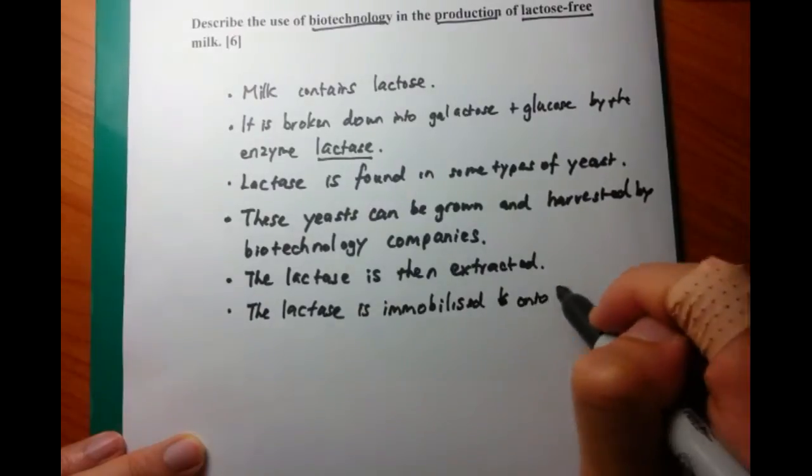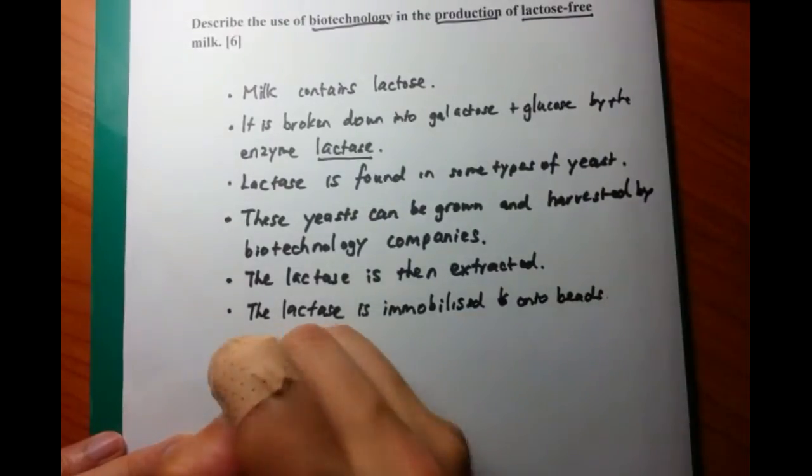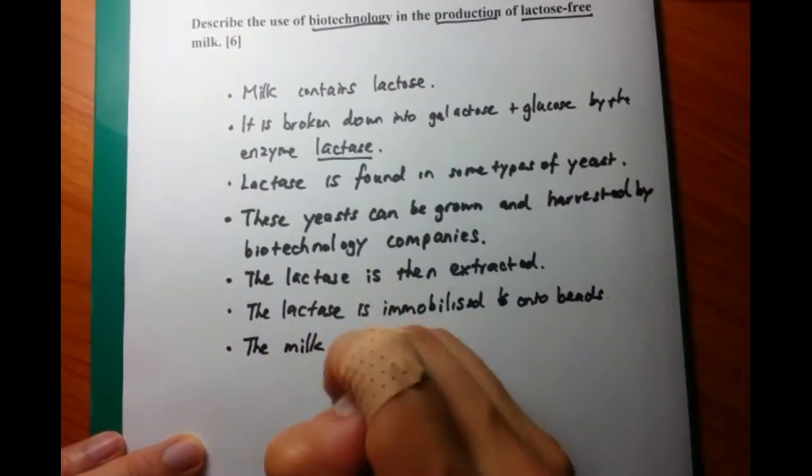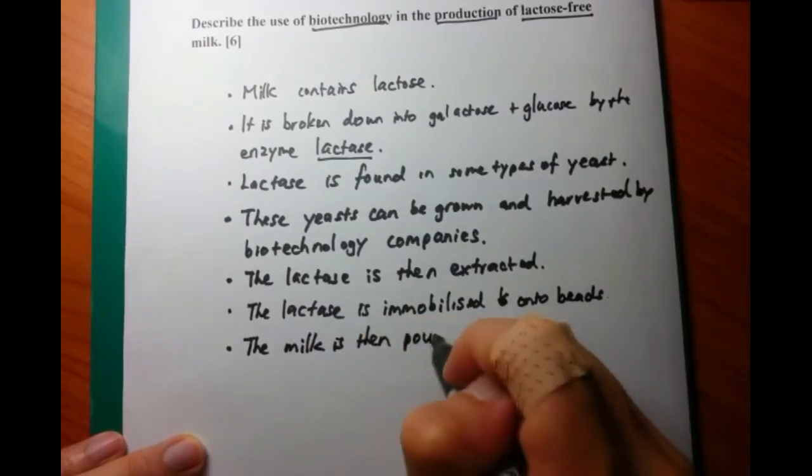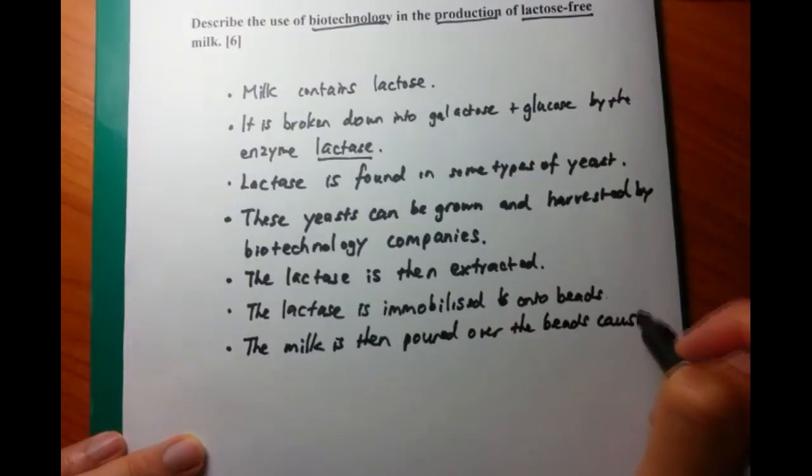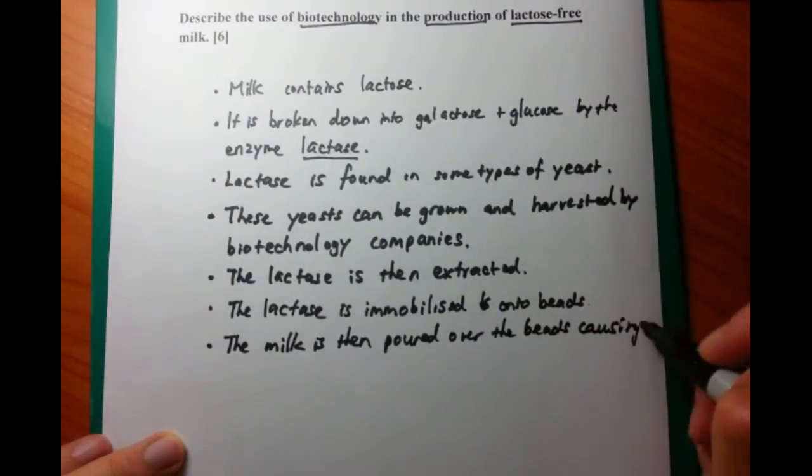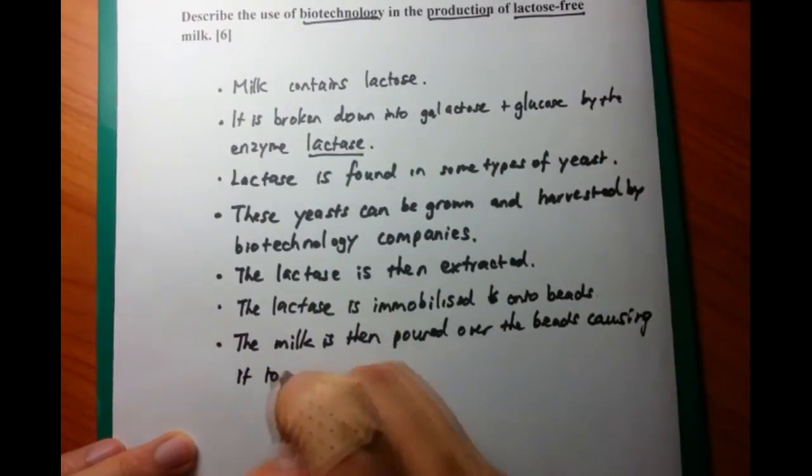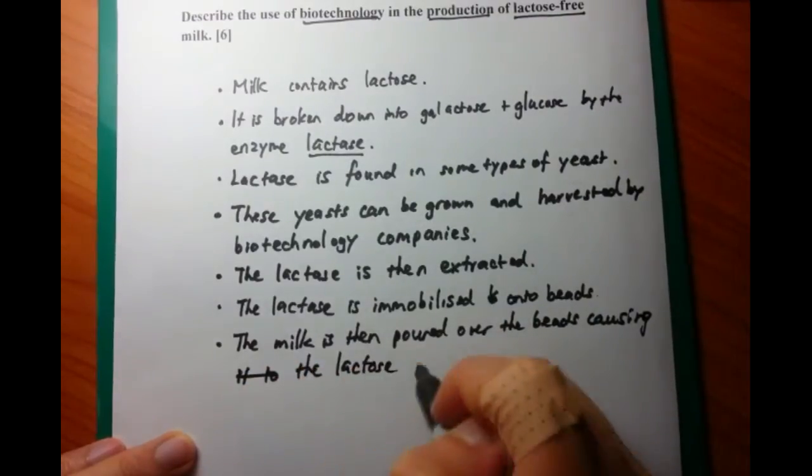Now the lactase, what happens is that it's immobilized onto beads. And these beads, they are fixed onto a surface. And then the lactose which is found in milk, that's poured over these beads. And then as the milk runs over the beads, then we have the digestion of lactose into simpler molecules.